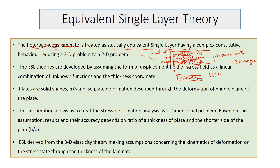Instead of considering separate laminas 1, 2, and 3, we treat it as a single layer. The displacement field u(x, y, z) is expressed at the mid-plane: u equals u-naught — the in-plane displacements at the mid-plane — plus z times some field variable phi. This gives us a single displacement description for the complete laminate thickness.